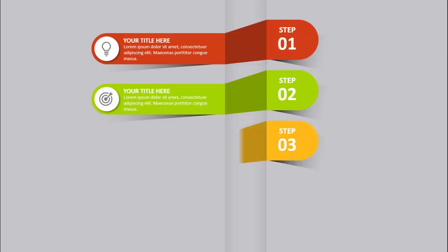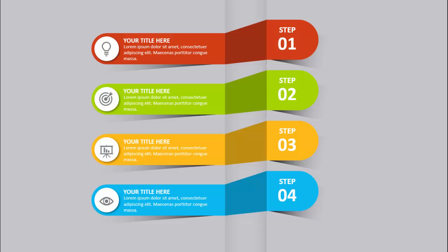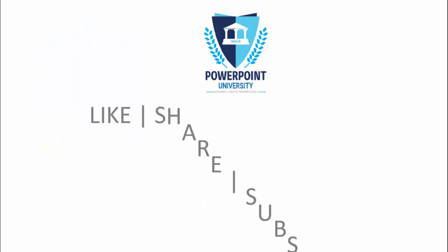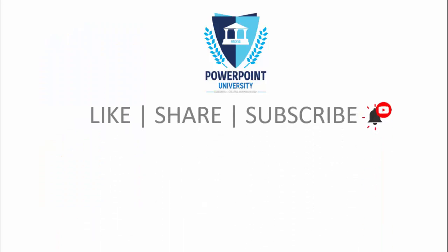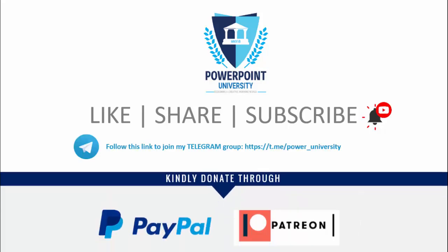When I click it will show you step 2 in a different color, then step 3 and step 4. Likewise I have created one more slide where I have used just one different color only. If you have not subscribed to my channel PowerPoint University, please subscribe now and make sure to enable the bell notification icon. You can join my Telegram group with the link provided, and you can contribute through PayPal or Patreon — the link is in the video description. I have used Office 2019 version to do this.